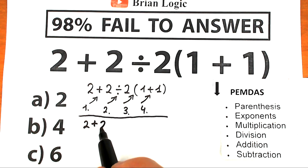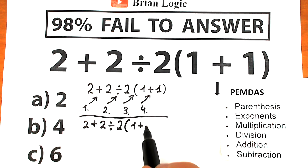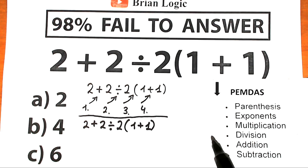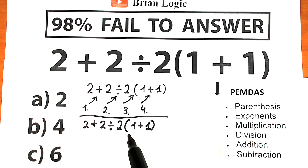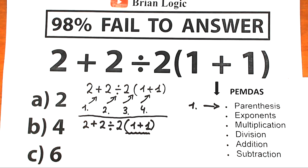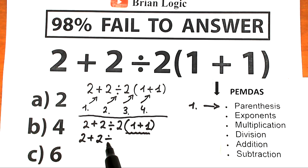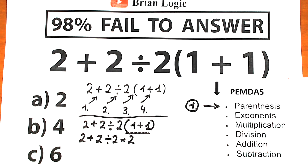We have 2 plus 2 divided by 2, and inside parentheses we have 1 plus 1. The first step — parentheses have the highest priority. Let's scan where we have parentheses. We have them on the right-hand side. So first, we evaluate the expression inside parentheses: 1 plus 1 equals 2. We complete this first step — the parentheses part.